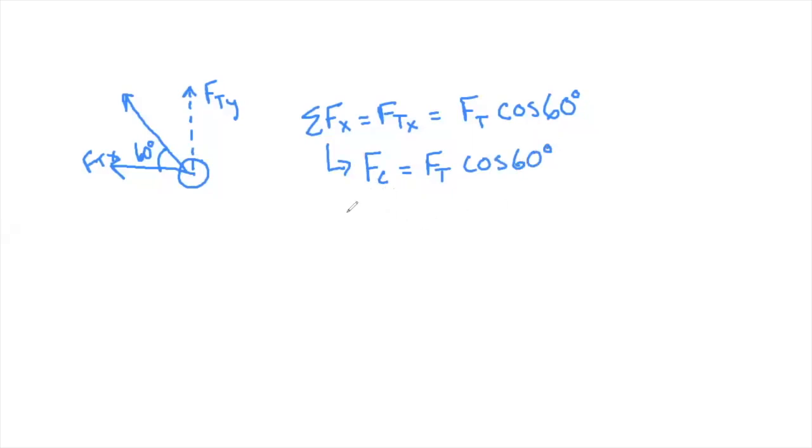And we know that FC is equal to MV squared over R, and that's given on your reference table, which is now going to be equal to FT cosine of 60. And now let's see if we can start to plug in some of our givens, and we can solve easily for V squared. Well, if I look, I would say that V is going to be equal to the square root of FT cosine of 60 times R divided by M. But I don't know the radius of the circle just yet.